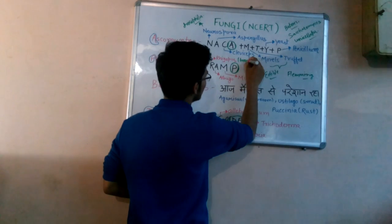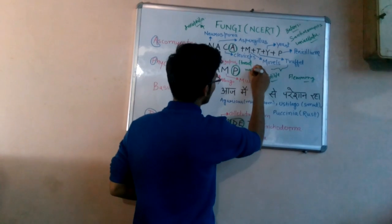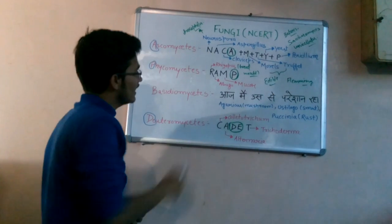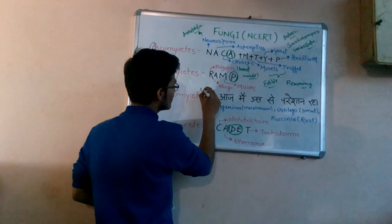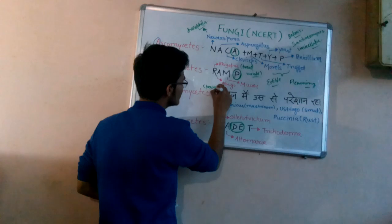You have to memorize that Rhizopus is the bread mold. A is Albugo, which is parasitic on mustard.